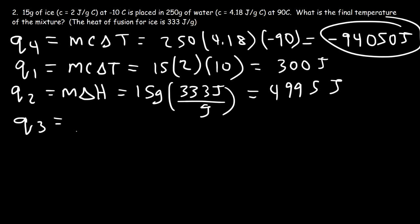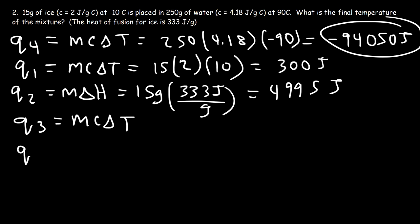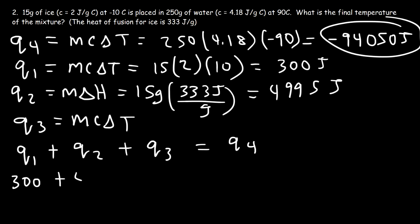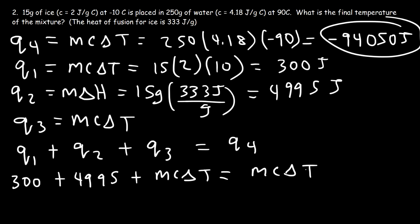So we need to heat up the liquid water using this equation. We don't know the final temperature, but we know the number of Qs involved. We need Q1 to heat up the ice to 0 degrees Celsius, Q2 to melt all of the ice, Q3 to raise the temperature of the cold water sample, and Q4 to cool down the temperature of the hot water sample. We already know Q1 is 300 and Q2 is 4,995. Q3 and Q4 are both MC delta T.